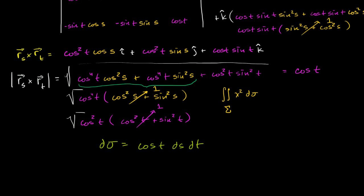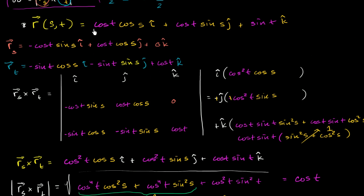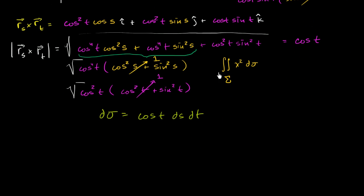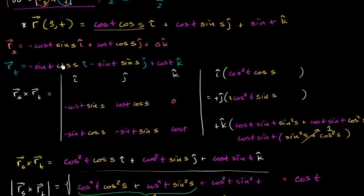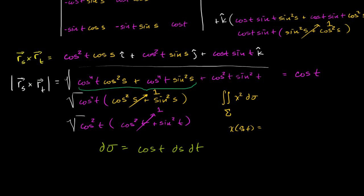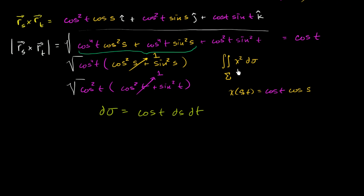We know the parameterization of x. Going back to the original parameterization, x of s and t is equal to cosine t times cosine s. So x squared is going to be cosine squared t times cosine squared s.